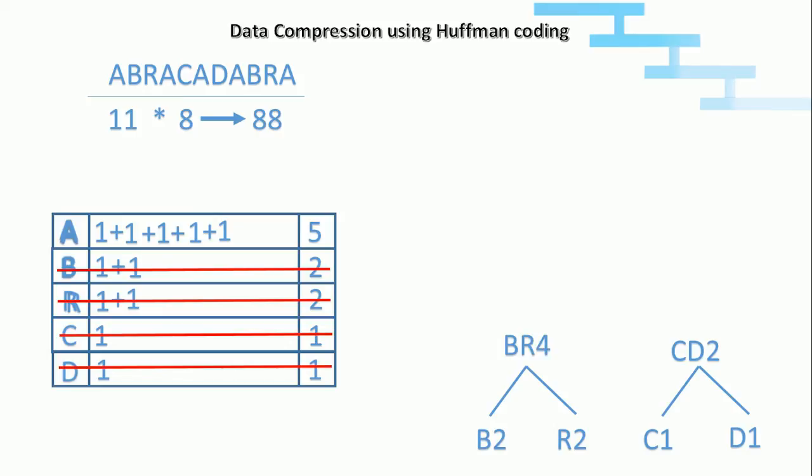And we will take the next lesser frequent character, the next lower frequency is 5. So by comparing this, 4 can be joined with 2 because 4 and 5 are big when compared to 4 and 2. So we will merge 4 and 2 which will be 6 because B and R has the frequency 4, C and D has the frequency 2. So when combining all this, we will get the frequency 6.